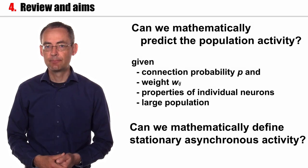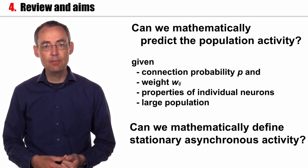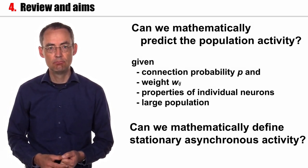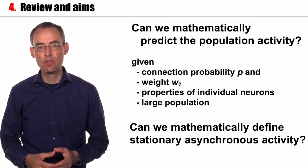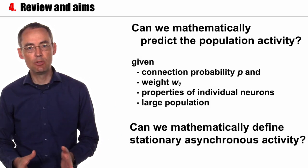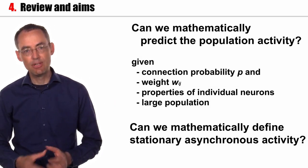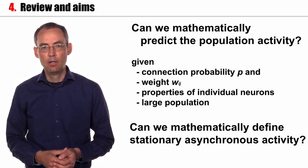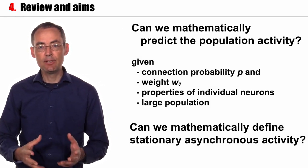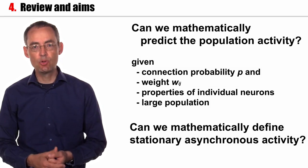Now we want to get mathematical. Can we mathematically predict the population activity given the connection probability p, the weights, the properties of individual neurons, and a large population? Can we mathematically define stationary asynchronous activity?